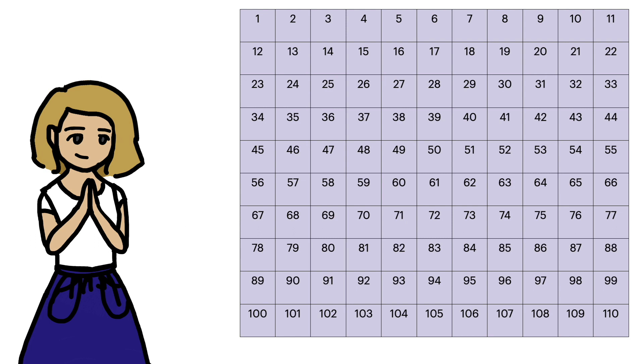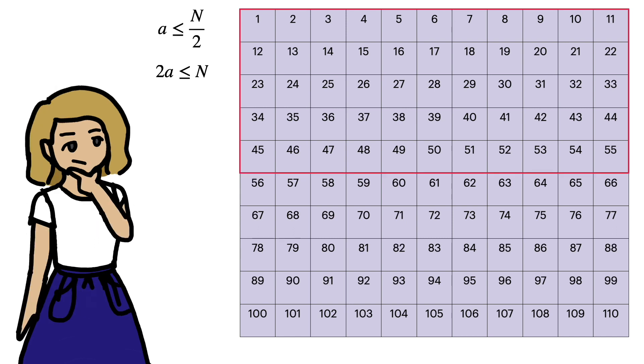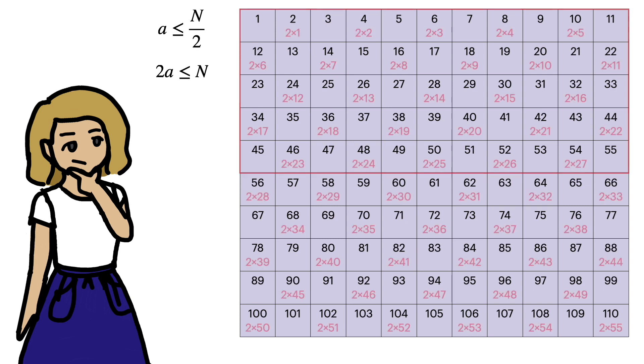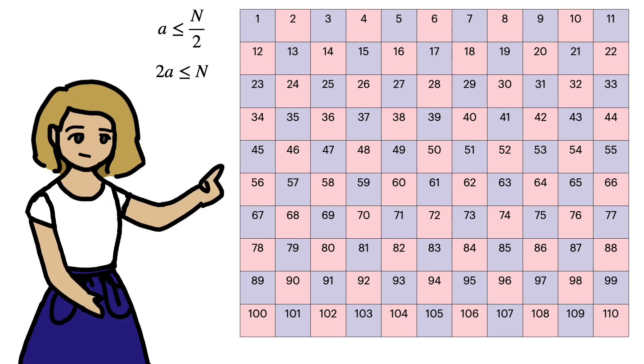Now we look at all the integers a below n/2. It's clear that for all such a, 2a is less than or equal to n, and 2a is a multiple of 2. So we multiply each of these a by 2, and get rid of the results. That's the first iteration of the sieve. And it's going to be convenient to keep track of how many blue squares there are as we go.